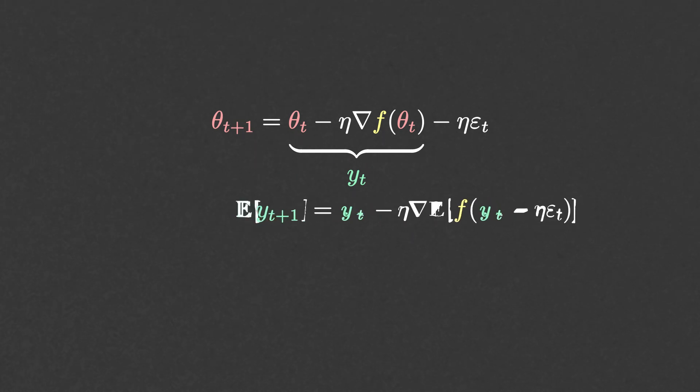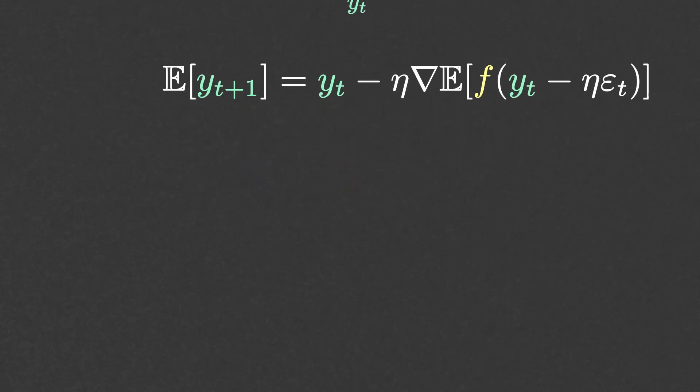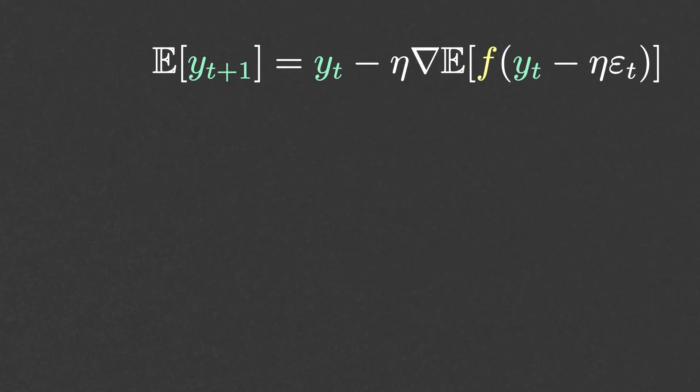Taking expectations with respect to the noise leads to this. Or in other terms, Stochastic Gradient Descent is just Gradient Descent in disguise applied to a smooth version of F.